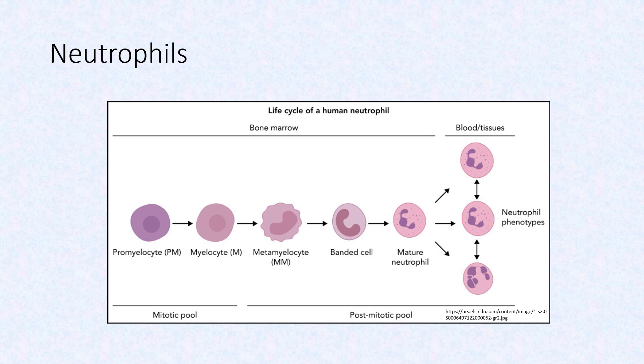When an infection is present, the neutrophils are released into the blood before they have matured. When there is a predominance of immature neutrophils, it is called a left shift.